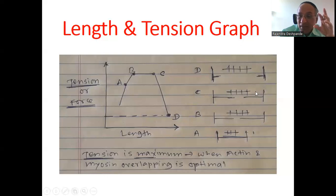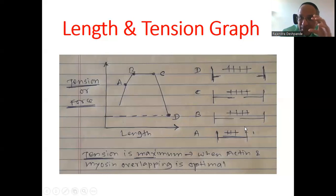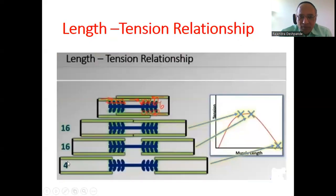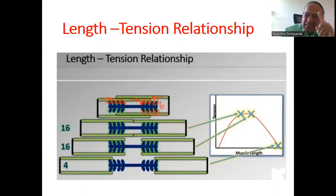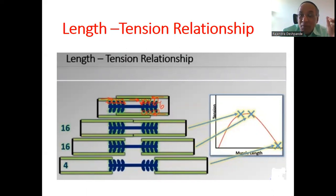You must remember: actin and myosin filament overlapping creates tension. When overlapping is maximum, tension will be maximum; overlapping less means tension is less. Here in the diagram, when they are too far apart — Z line to Z line — there is no tension. At maximum overlapping, 4 plus 4 equals 8 heads of myosin are attached to actin on each side; 8 molecules are attached, so tension will be maximum. When coming closer again, tension will be less because some heads of myosin will not be attached to actin molecules.